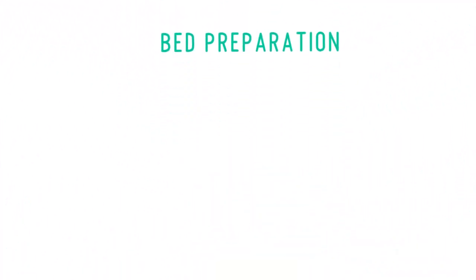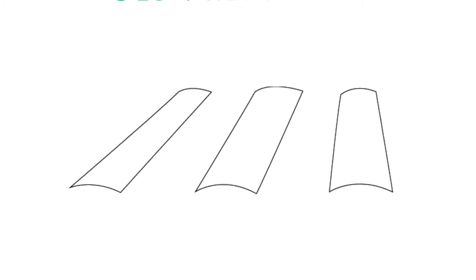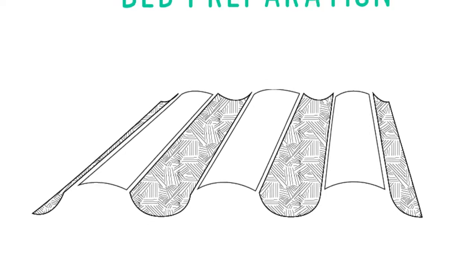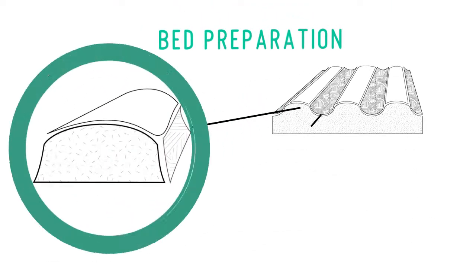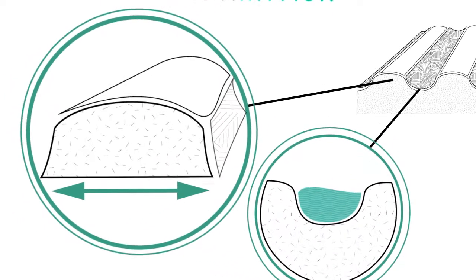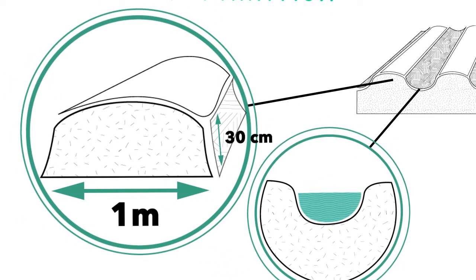Bed Preparation. Shape the land into beds so that it can facilitate furrow irrigation of the seedlings and drainage after heavy rain. Always make sure the width of the beds is half a meter or one meter wide and 30 centimeters high.